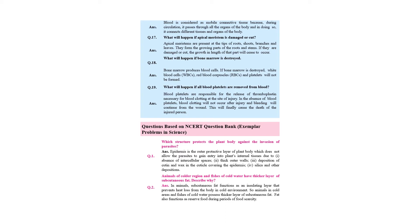Now, creative questions. Which structure protects the body against the invasion of parasites? In plants, the answer is epidermis. Epidermis is the outer protective layer of plant body which does not allow parasites to gain entry into the plant's internal tissues due to absence of intercellular spaces, thick outer wall, deposition of cutin and fats in the cuticle covering, and silica deposits.